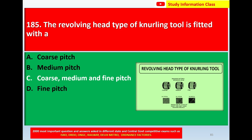This is the diagram of a rolling head type knurling tool. For question 185, the revolving head type knurling tool is fitted with coarse, medium, and fine pitch.